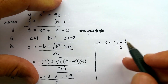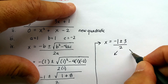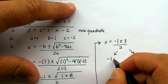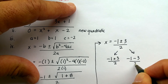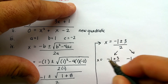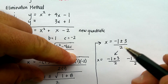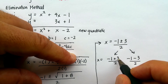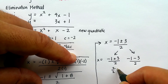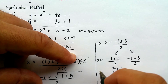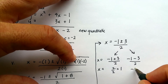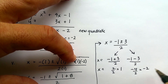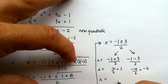The plus or minus tells me I have two possibilities. Negative 1 plus 3 over 2: that's 2 over 2, which equals 1. Negative 1 minus 3 over 2: that's negative 4 over 2, which equals negative 2. So my x can be positive 1 or negative 2 — two possible solutions.